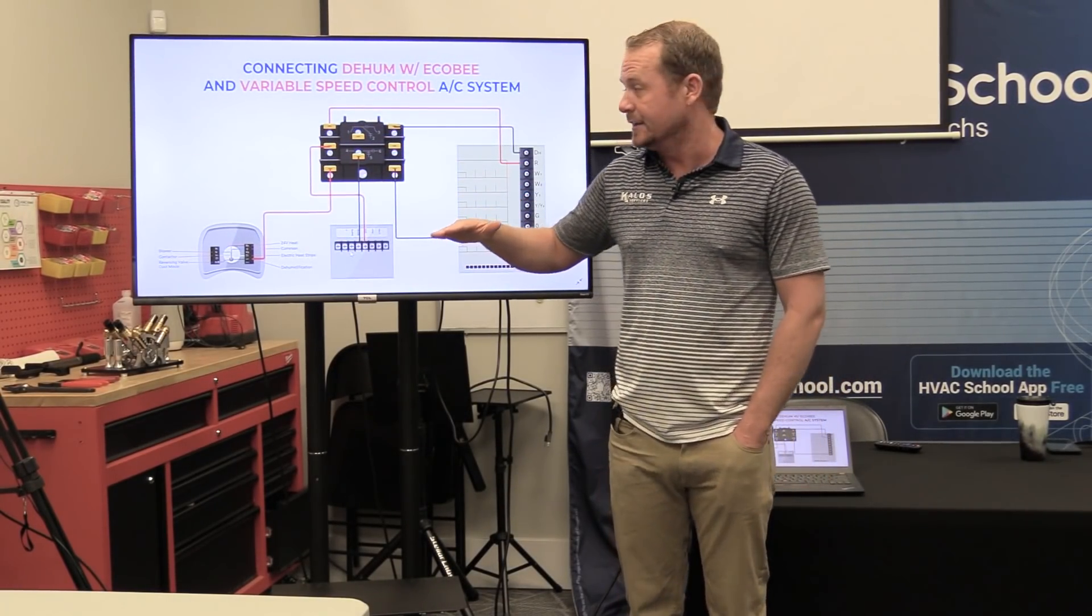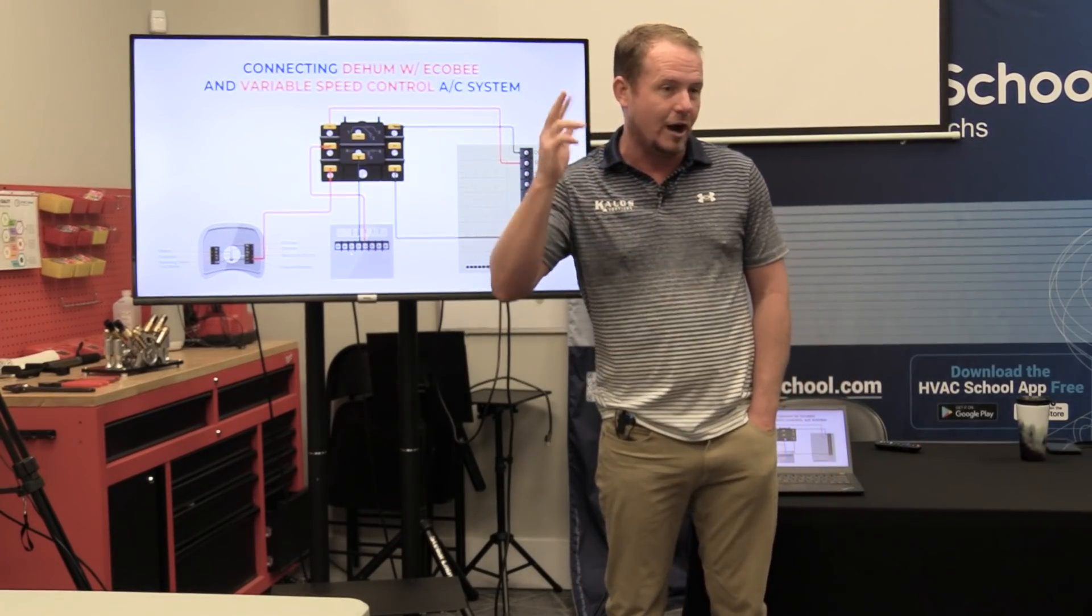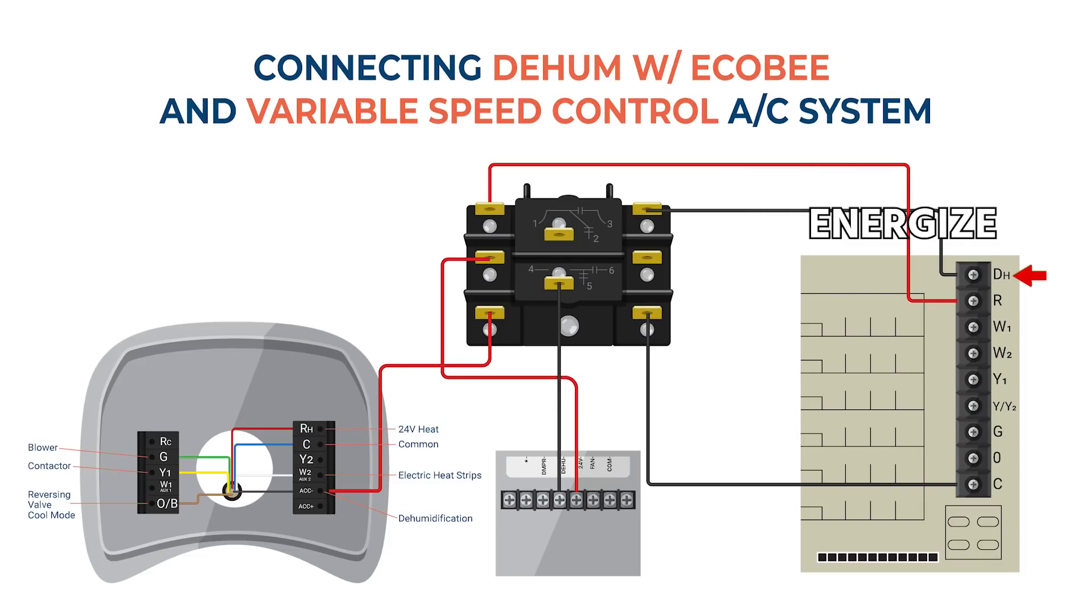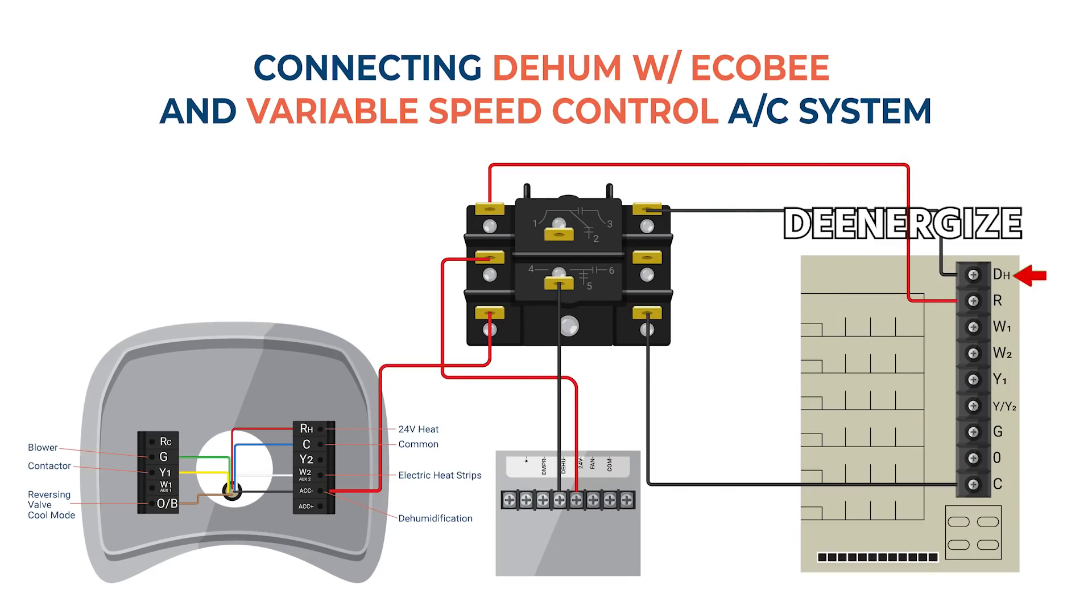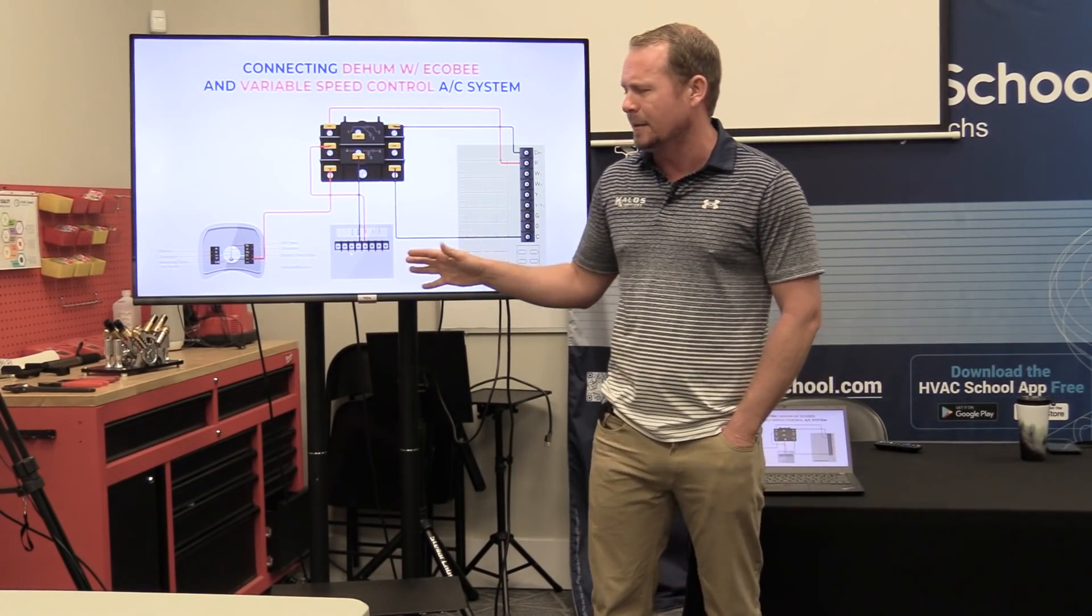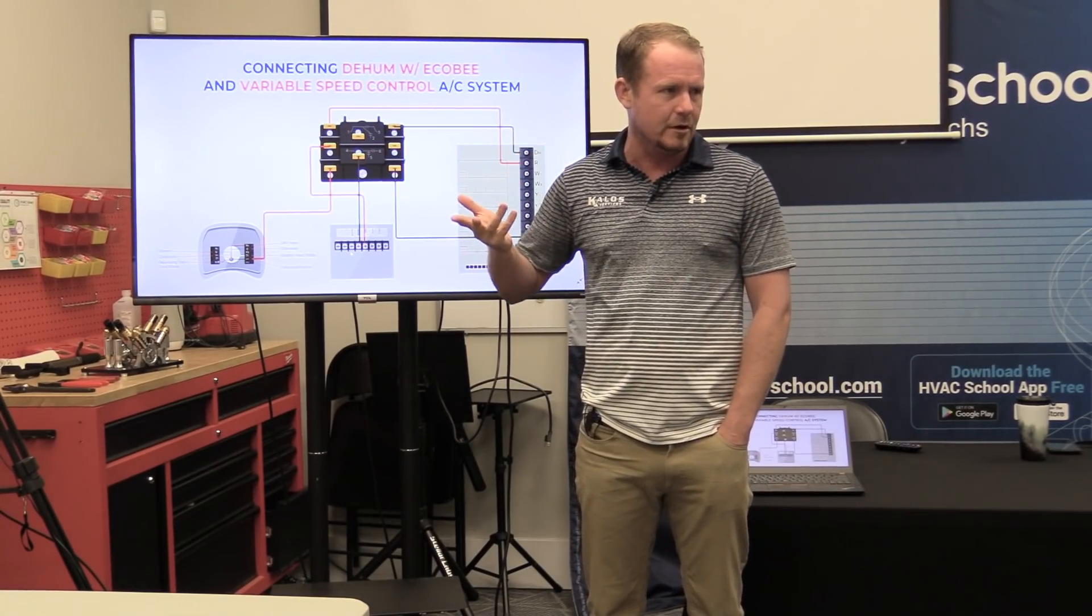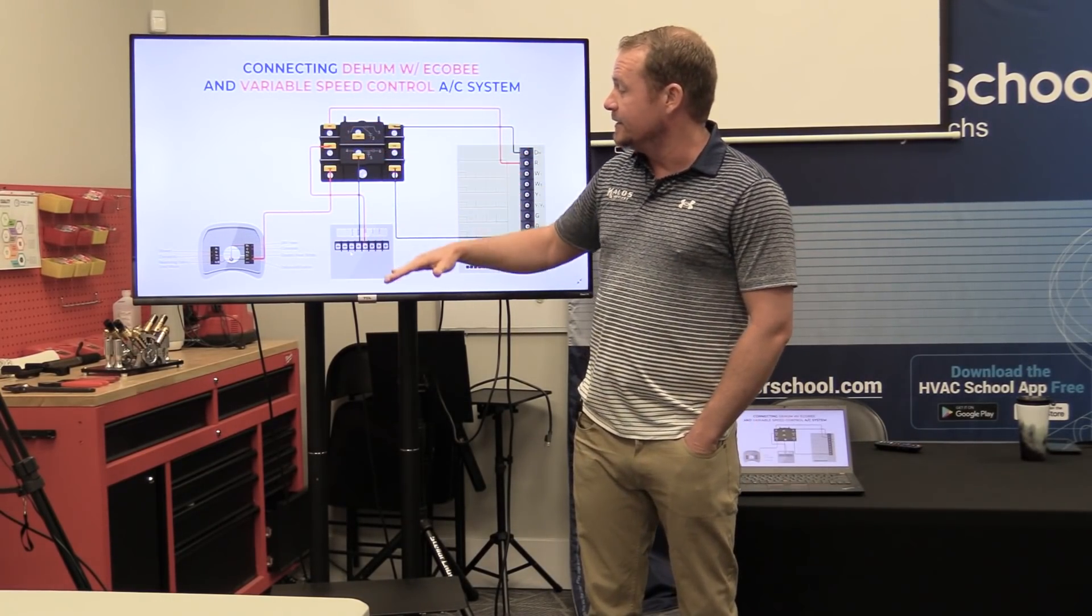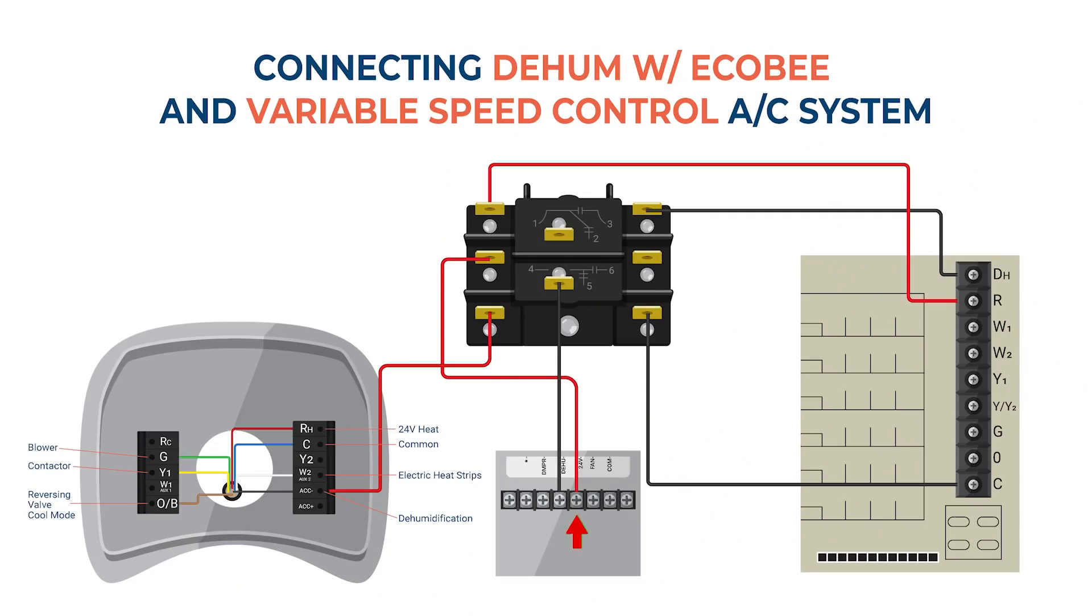Now, where it gets complicated is dehumidify mode for a dehumidifier and dehumidify mode for an air handler are opposite. For a dehumidifier, you energize DH with 24 volts in order to make it run. In an air handler, you de-energize DH in order to make it go into dehumidify mode. So that's why we're doing this. We're also doing it because we have to isolate. Because a lot of people will say, why do you need the relay? Well, we showed why you need it because they're opposite modes. But the other reason we need it is because we need the dry contacts because this has a separate transformer. You can't mix the 24 volts from one transformer with the 24 volts from another transformer.